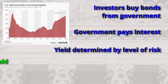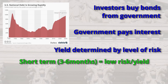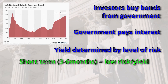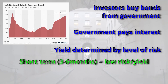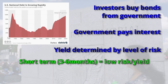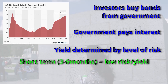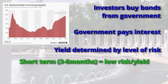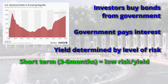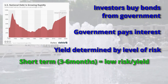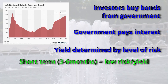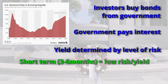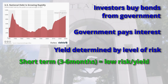When you lend money to the government for a short period of time — three to six months, for example — this is low risk to the investor as there's not much that could happen over such a short period of time. But this also gives very little opportunity for the government to do much with the money. So typically a short loan period would have a very low rate of interest.